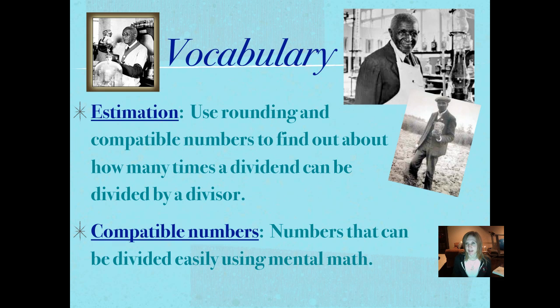Our vocabulary tonight: estimation means to use rounding and compatible numbers to find out about how many times a dividend can be divided by a divisor. Our next term is compatible numbers. Remember, those are numbers that can be divided easily using mental math in this case. And those are some great pictures of George Washington Carver in his research lab as he is trying to solve problems for farmers.